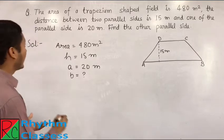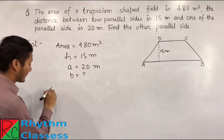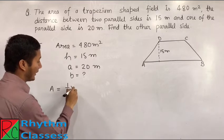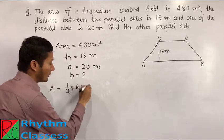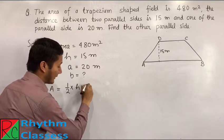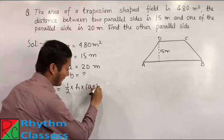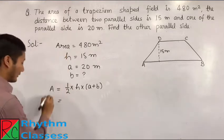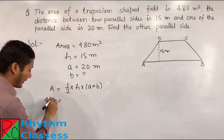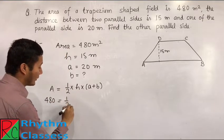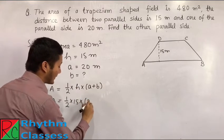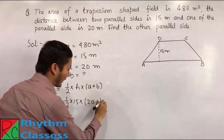In the simple way, we can say area of trapezium is, area becomes 1 by 2 into height into sum of parallel side. That means A plus B. From here, we can say we have area that is 480 equals to 1 by 2 into we have height 15 meter into A plus B. We have A 20 and B we have to find out.